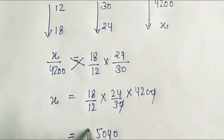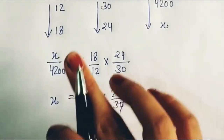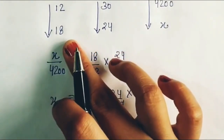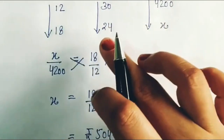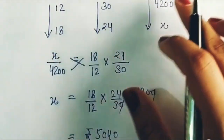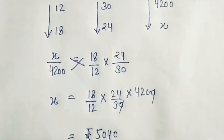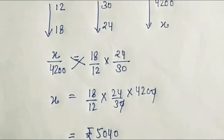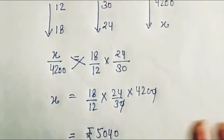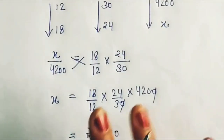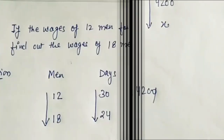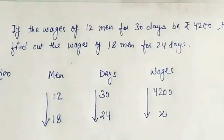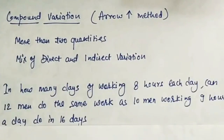Solving this equation, we get 5040. So wages for 18 men working for 24 days comes out to Rs. 5040. This is a simple and precise method using which we can easily solve any compound variation question. Let's take one more example to make it even clearer.